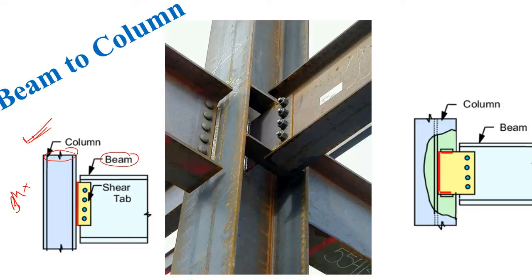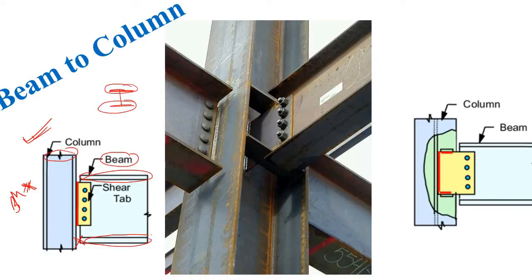In any beam, especially an I-section, the bending moment is carried by the flanges. So if you want to eliminate the bending moment at this support, you simply do not connect the flange to the column. Here you can see there is no connection between the flanges — only the web part is connected by means of a plate known as a shear tab. The web of the beam is connected to the plate using bolts, and then the plate is welded to the column flange.